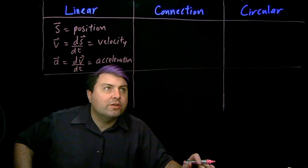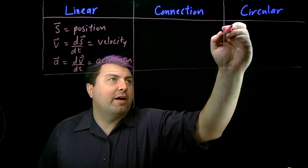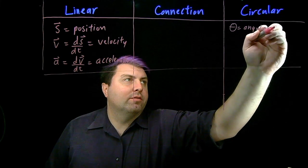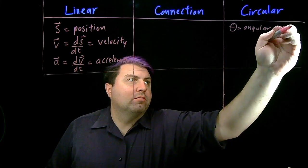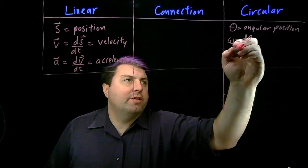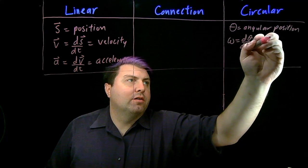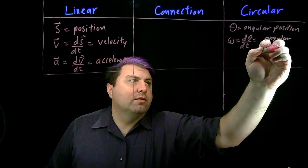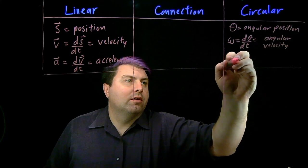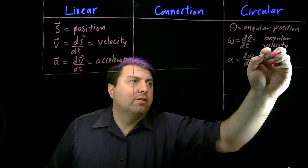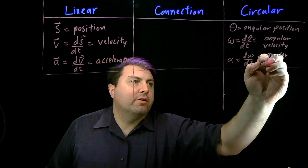So over in circular, our definitions are that theta is angular position, omega, which is d theta dt, is angular velocity, and alpha, which is d omega dt, is angular acceleration.